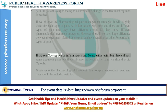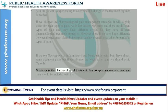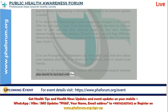If we see nociceptive or inflammatory and neuropathic pain, both have almost the same treatment plans. But if we observe the nociplastic pain, we should avoid opioids. Whatever the pharmacological treatment plan, non-pharmacological treatment should be included with it.